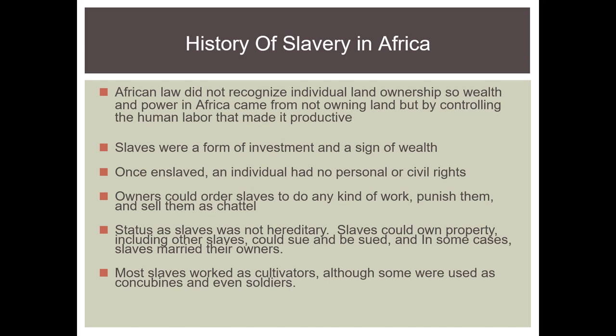In this system, the slave would work around the house and family of the master, but they would still have some freedoms. These slaves were allowed to own profits, they could marry, and they could also pass on property or wealth to their children. Also, their children were considered free and not slaves. These African slaves had legal protections, could sue, could be sued, and once freed from their bondage, they could integrate and join the society they had been a slave to.